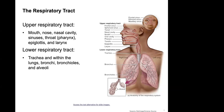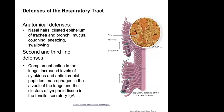The respiratory tract can be broken up into the upper and lower respiratory tracts. The upper includes the mouth, nose, nasal cavity, sinuses, throat (pharynx), epiglottis, and larynx. The lower respiratory tract goes from the trachea downward into the lungs, all the way down to the alveoli.